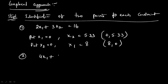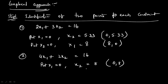Moving on to the second constraint: 4x1 plus 2x2 equals 16. Put x1 equal to zero, x2 equals 8, so the point is (0, 8). Put x2 equal to zero, x1 equals 4, so the point is (4, 0).